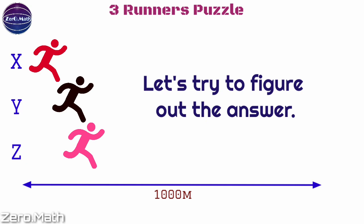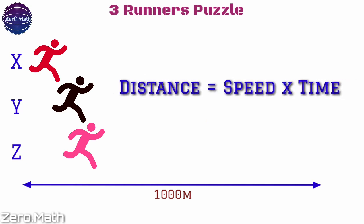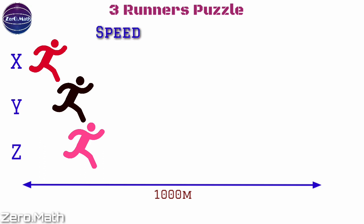Let's try to figure out the answer now. We know the formula: distance equals speed times time, where speed is represented by letter s and time is represented by letter t.